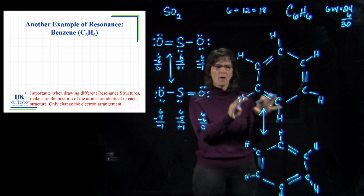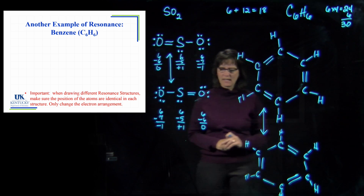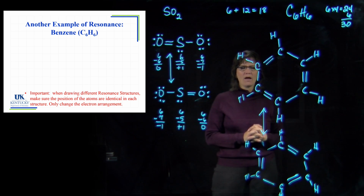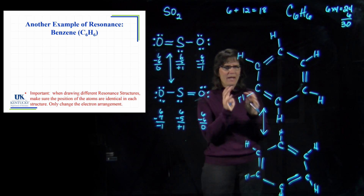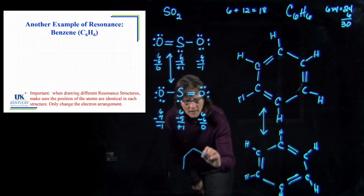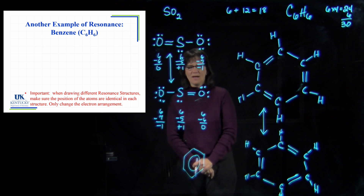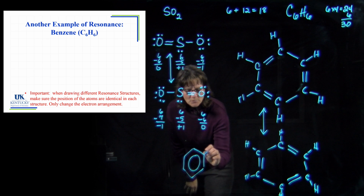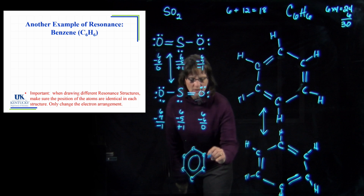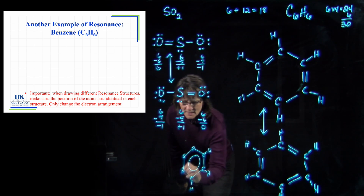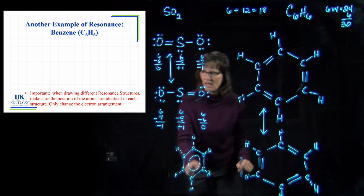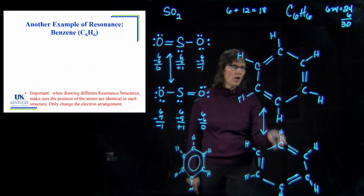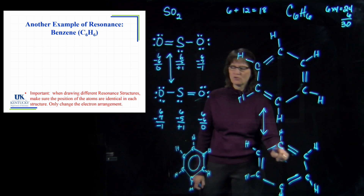Benzene is a very important molecule in organic chemistry — you'll see it a lot. Very often it is drawn not with alternating single and double bonds, because those bonds don't behave as if they're distinct single and double bonds. They behave as if all bonds are exactly the same, about a bond and a half. The common depiction is a hexagon with a circle in the middle — that circle represents the six electrons moving about in the resonance structure of those six carbon atoms. You'll often see no C's or H's written; any peak where lines meet implies a carbon with its hydrogens.